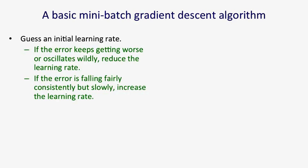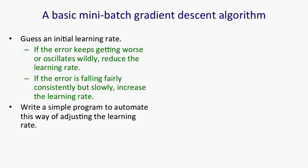But what you're hoping is the error will fall fairly consistently. And if it's falling fairly consistently and very slowly, you can probably increase the learning rate. Once you've got that working, you can then write a simple program to automate that way of adjusting the learning rate.